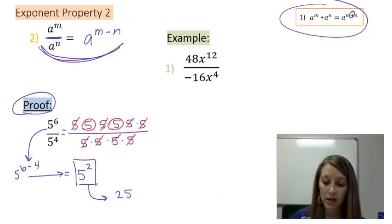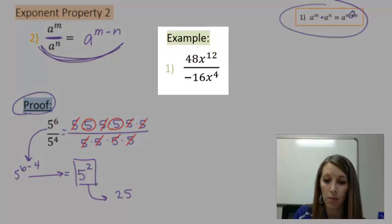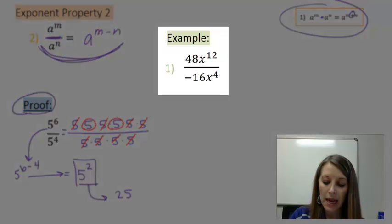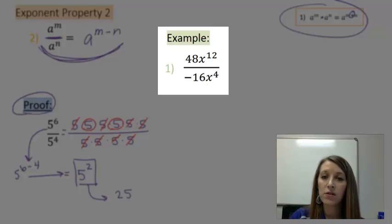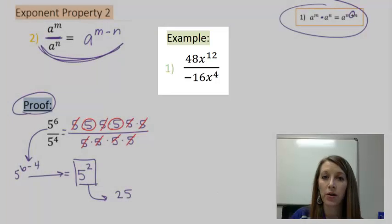So let's see how this actually works in a homework problem over here. 48x to the twelfth divided by negative 16x to the fourth. And I suggest that you pause the video to see if you can figure this out on your own.